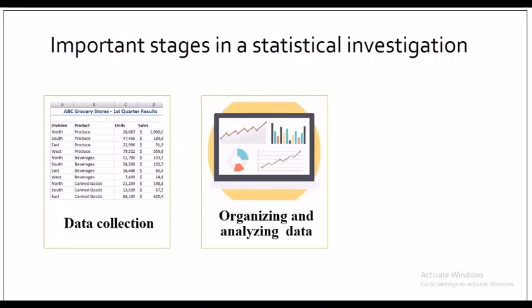The second and third stages are organizing and analyzing data. Data collected from published sources are generally in organized form. However, large masses of figures collected from surveys need to be organized and presented in the form of diagrams and graphs. The purpose of analyzing data is to dig out information useful for decision making. Commonly used methods include measures of central tendency, measures of dispersion, correlation, regression, and ANOVA.